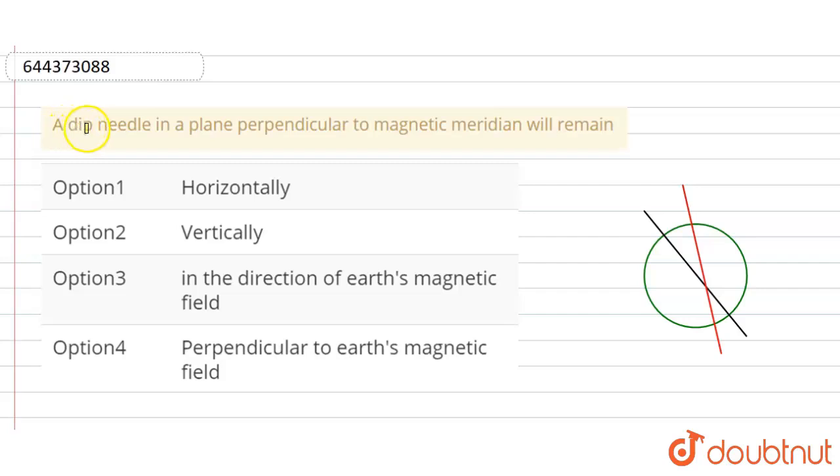Hello everyone, a dip needle in a plane perpendicular to magnetic meridian will remain: option first horizontally, second vertically, third in the direction of Earth's magnetic field, fourth perpendicular to Earth's magnetic field.